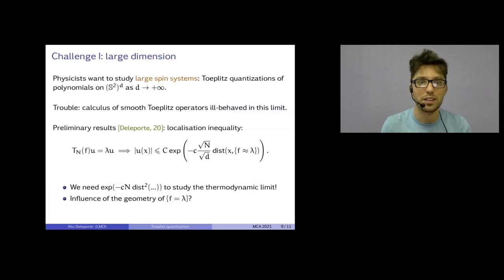Okay. I'll try to quickly give you two modern challenges for Toeplitz quantization. The first is the large dimension challenge. I told you about spin systems. Well, physicists want to study not only one spin, but a large number of spins interacting together. So, study the Toeplitz quantization of S^2 to the d. Well, in the thermodynamical limit, d tends to infinity. And you can't do symbol calculus in this limit. It just doesn't work because you have to take too many derivatives. So, you have to use the fact that Toeplitz quantization works well in the low regularity regime to do this. I obtained some a priori estimates, but I'm sure we can make them sharper. We need some exponential estimates of this form.